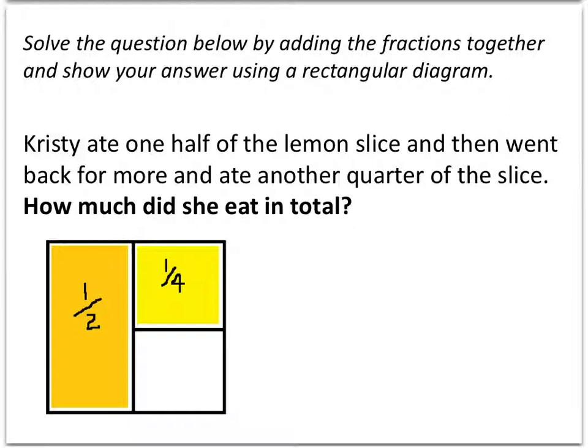Christy ate one half of the lemon slice and then went back for more and ate another quarter of the slice. So how much did she eat in total? If we look at our diagram set up like this, it's pretty easy to see that Christy has eaten three quarters of the slice.